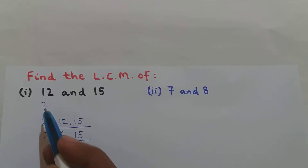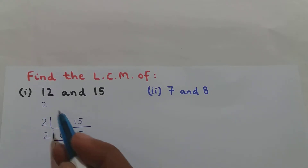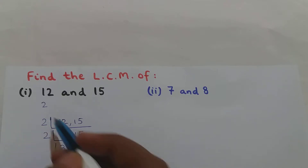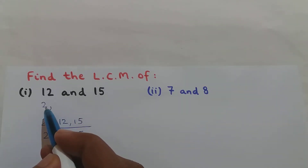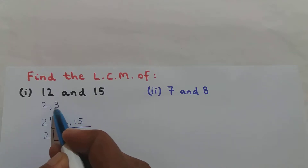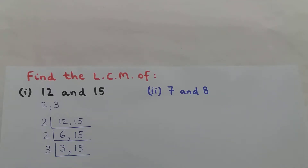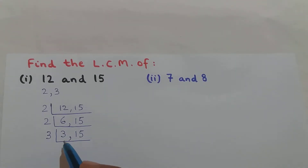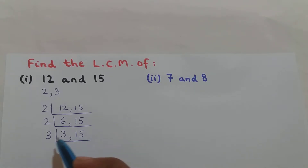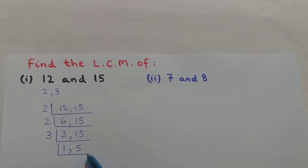Now 3 is not divisible by 2 and 15 is also not divisible by 2. So the next prime number after 2 is 3. Now 3 is divisible by 3, so I will write 3 here. 3 divided by 3 is 1, and 15 divided by 3 is 5.